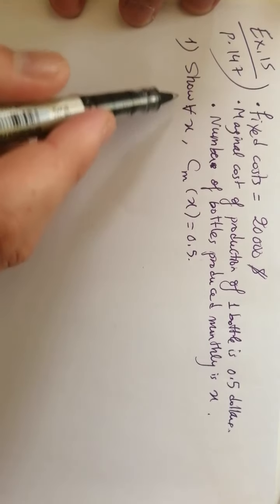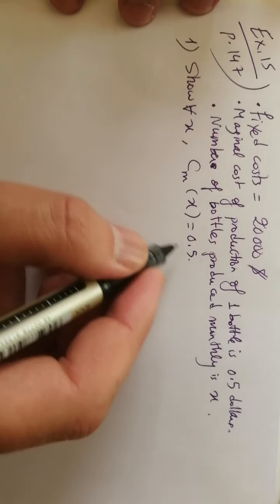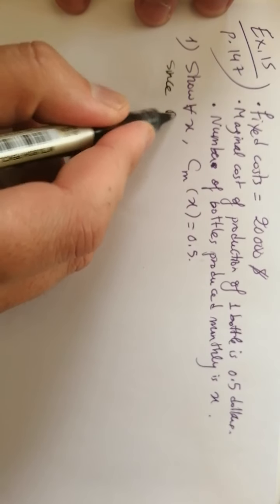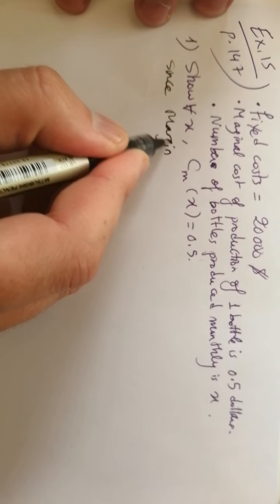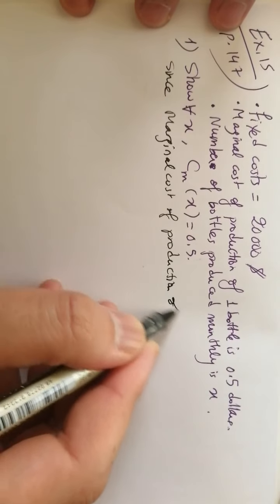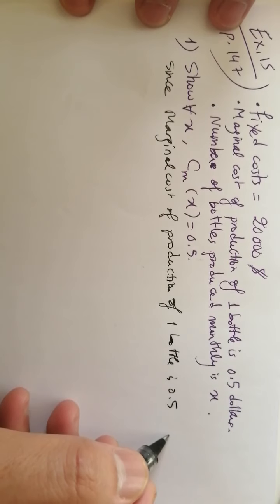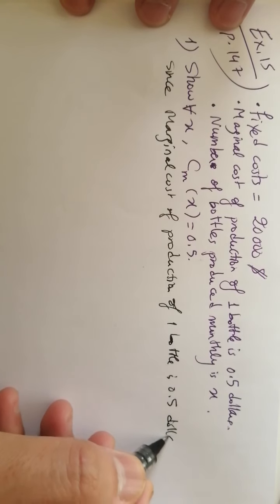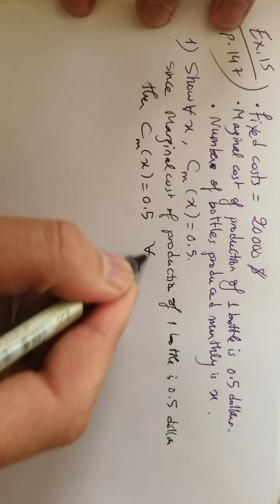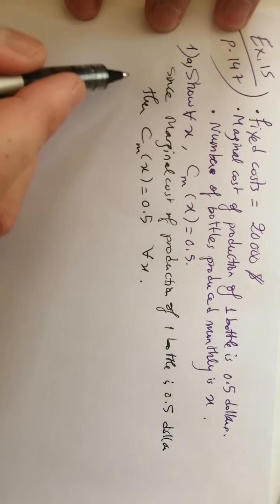For every x, CM of x is the marginal cost, which is $0.5. Since the marginal cost of production of one bottle is $0.5, then CM of x equals 0.5 for every x. This is Part A.